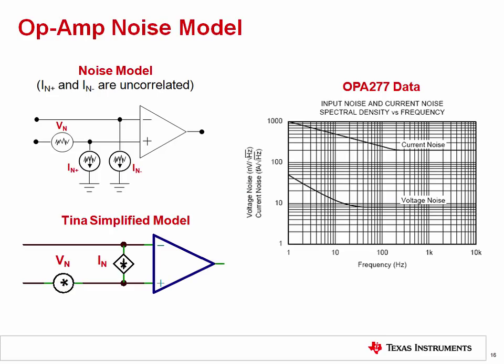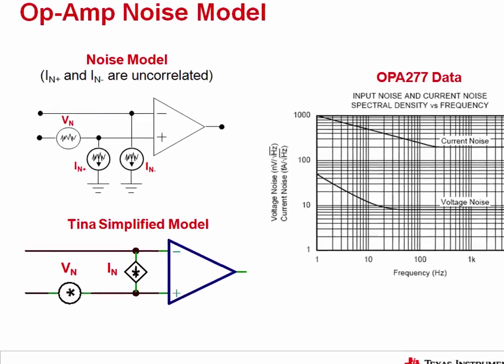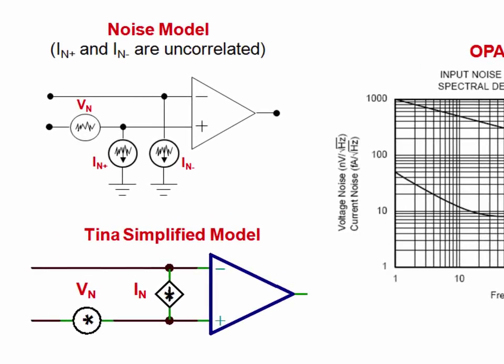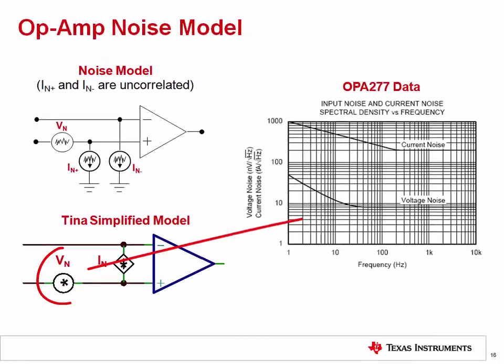This slide shows the typical op-amp noise model. In some cases, it is important to have two separate current noise sources, as shown in the upper left. In other cases, the simplified model with a single noise source between the inputs is adequate. The noise sources represent the spectral density curves. In the following videos discussing noise, we will learn how to use the op-amp noise model to predict the total peak-to-peak output noise for different amplifier configurations.